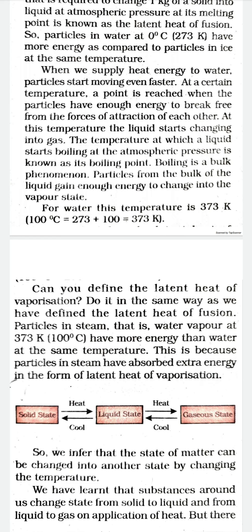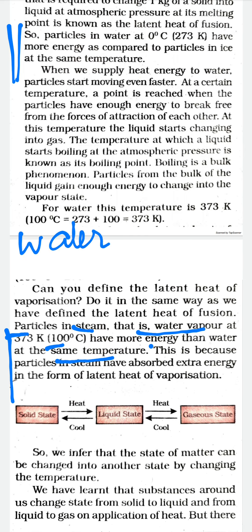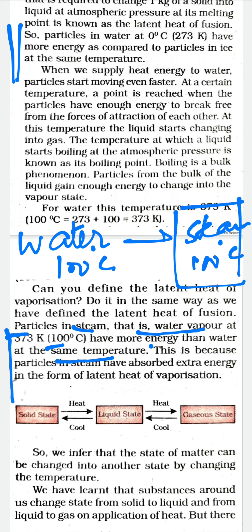Just as we discussed the energy of water particles versus ice particles, here we discuss the same concept for steam. Particles in steam — that is, water vapor at 100 degrees Celsius — have more energy than water at the same temperature of 100 degrees Celsius. Steam particles have got more heat energy than water particles at the same temperature. This is because the particles in the steam have absorbed the latent heat of vaporization — this is the extra energy they absorbed to come into the gaseous or vapor state.